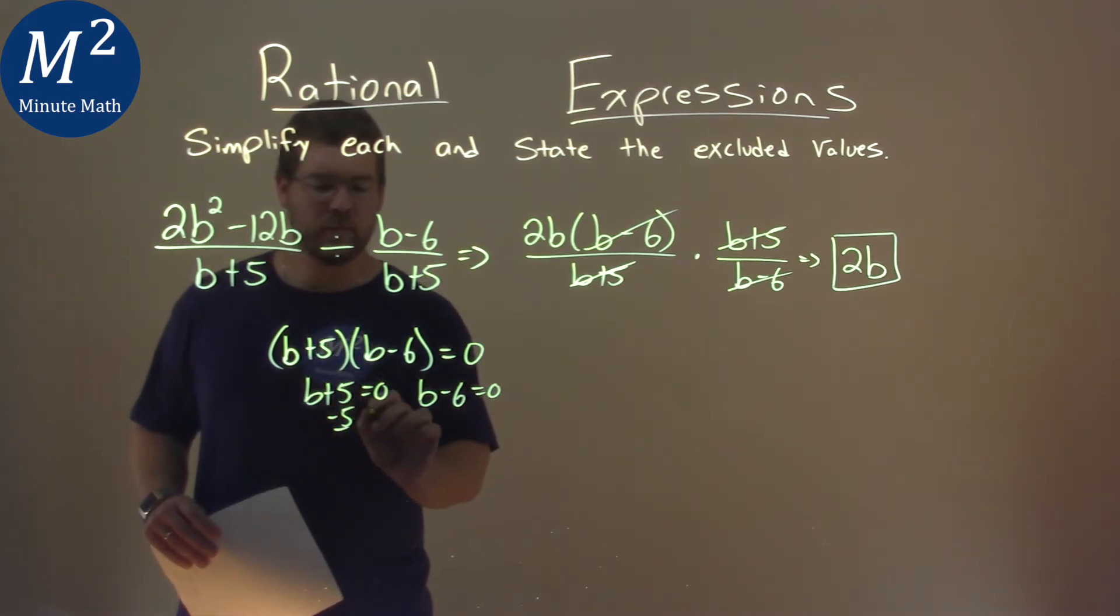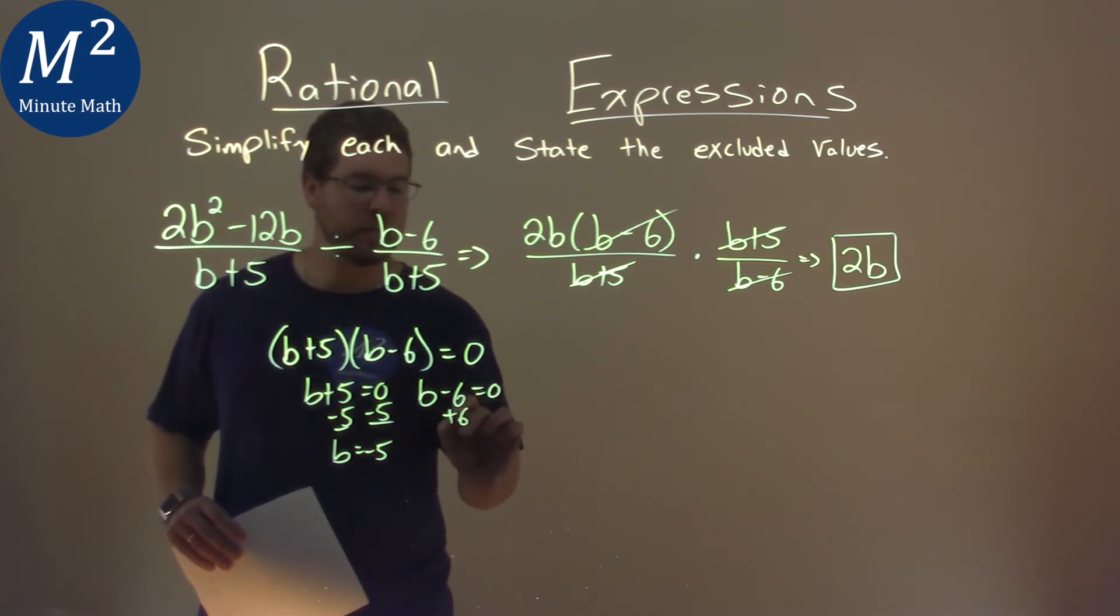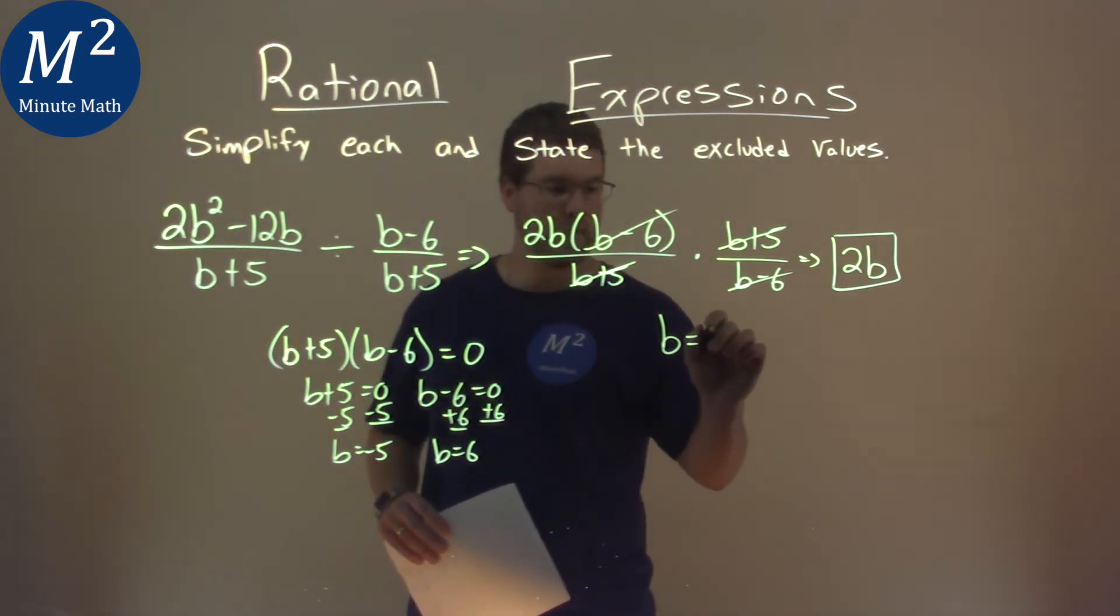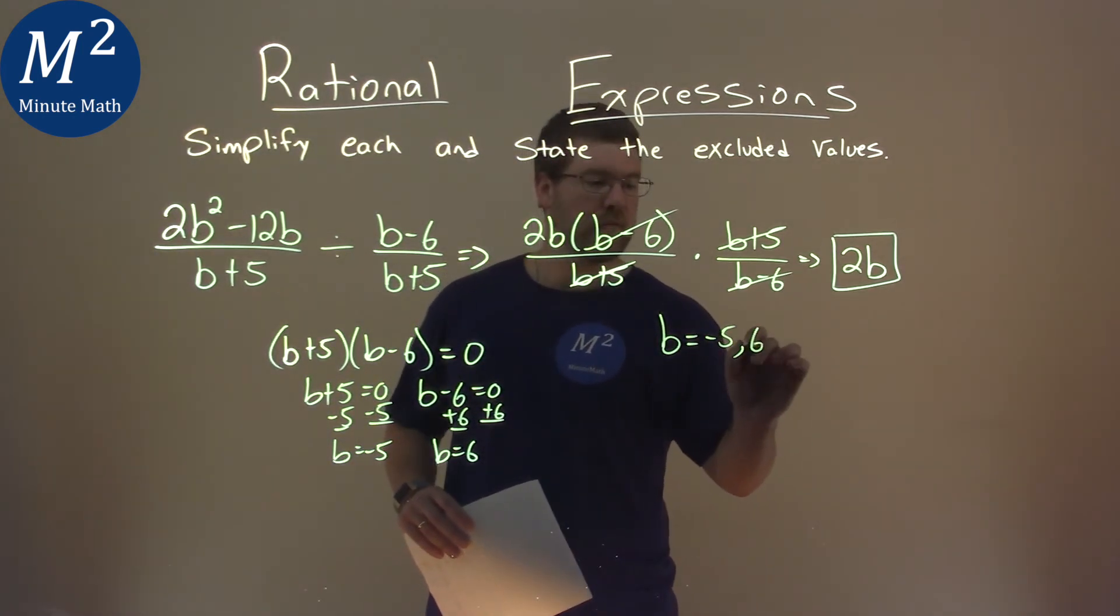Solve, subtract a 5 to both sides, and b equals a negative 5. Add a 6 to both sides, and b equals positive 6. And so my two excluded values are negative 5 and a positive 6.